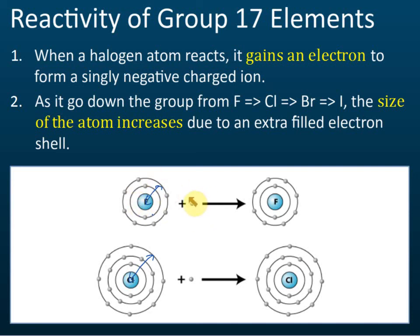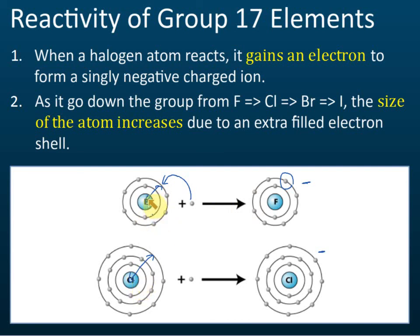When fluorine attracts electrons, it takes part in chemical reactions and forms the fluoride ion. The received electron fills into the empty space in the outer shell, and fluorine becomes a fluoride ion carrying one negative charge. Therefore, the reactivity of fluorine is higher compared to chlorine because it can attract electrons more easily.